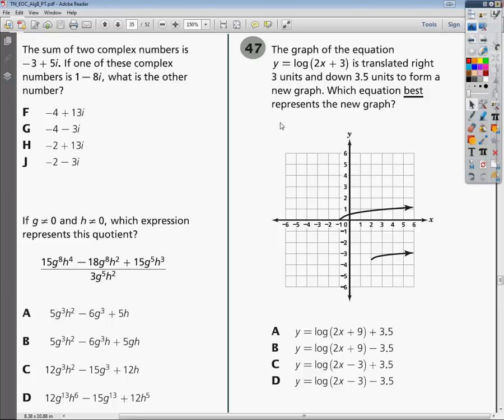The idea is I'm trying to take my original graph here. If I can get my pen to work, that'd be great. And I'm going to translate it to the right 3 units, and then I'm going to translate it down 3.5 units.